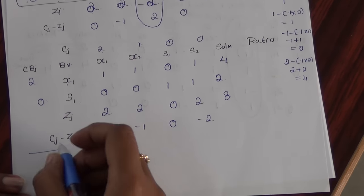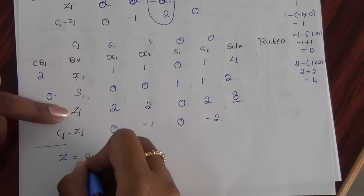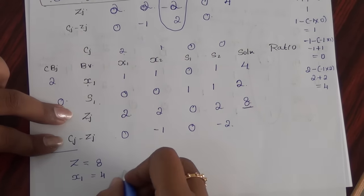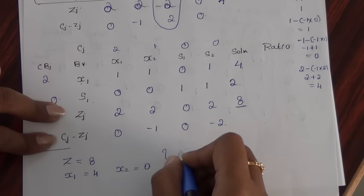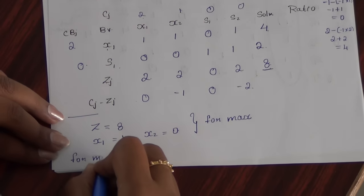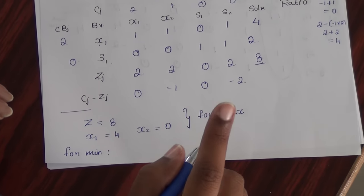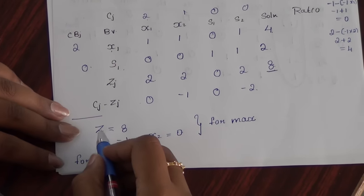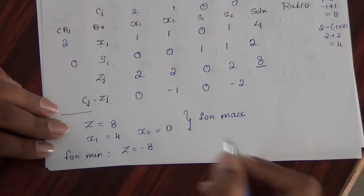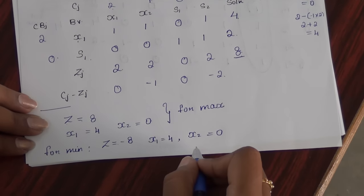The solution is: z equals 8, x1 equals 4, and x2 equals 0. This is for the maximization version. Since the original question was for minimization, I add the sign back — converting the objective function sign. So the final minimization solution is z equals negative 8, with x1 equals 4 and x2 equals 0. This is the final solution.